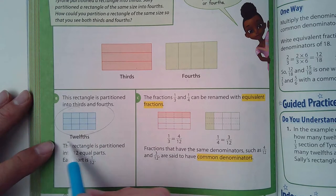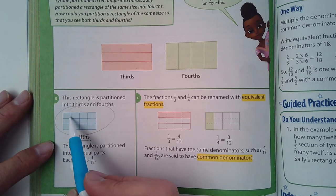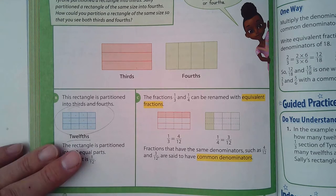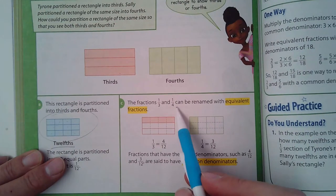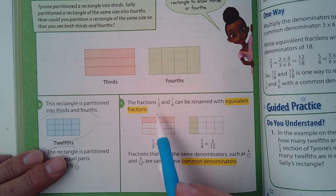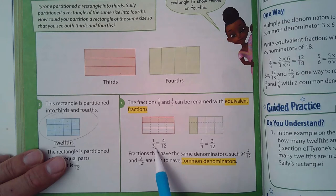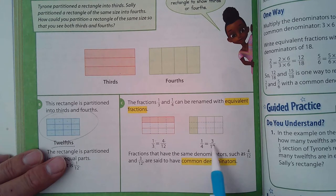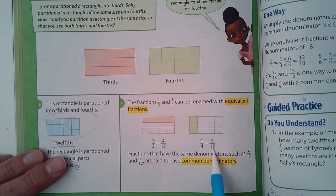How do I know it's twelfths? Well there's 12 little boxes: 1, 2, 3, 4, 5, 6, 7, 8, 9, 10, 11, 12. And the fractions one-third and one-fourth can be renamed with equivalent fractions. One-third is the same as four-twelfths and one-fourth is the same as three-twelfths.